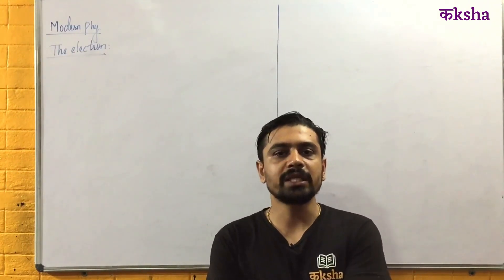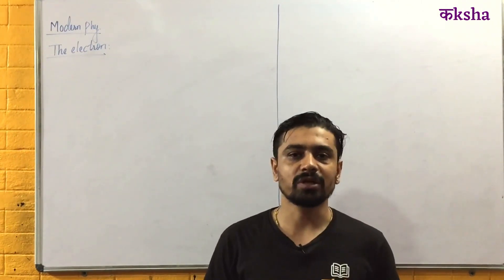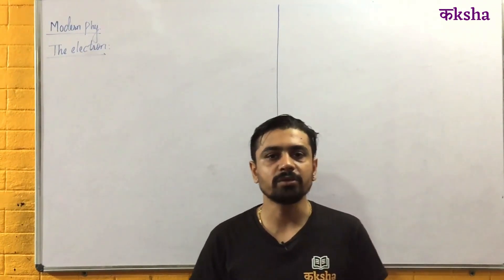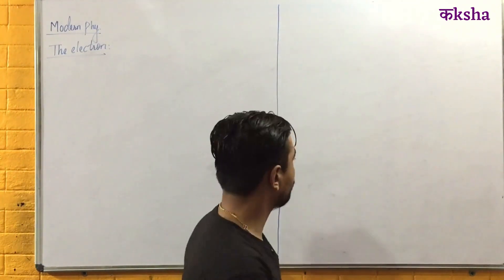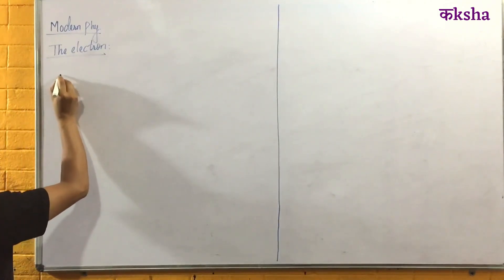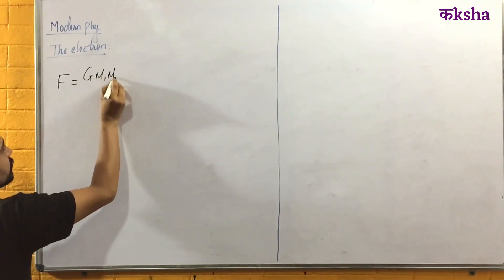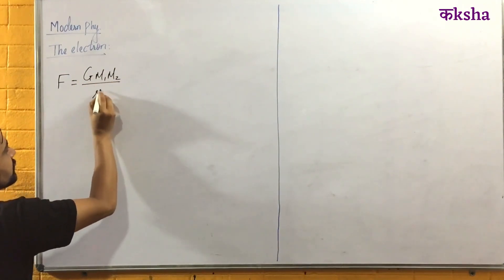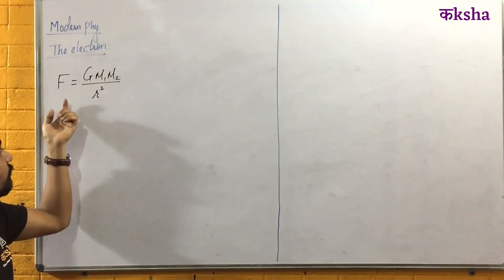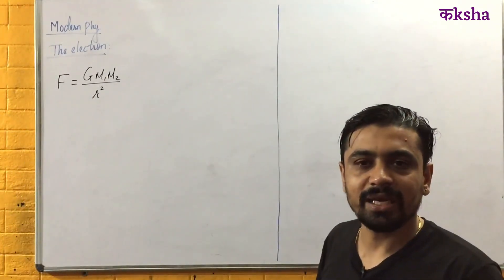This is a genius man from Great Britain, Sir Isaac Newton. In 1687, he published a book and published the laws of motion and the universal law of gravitation. The gravitational force between two bodies is given by F = G M1 M2 divided by R squared. If you know the masses of two bodies and the distance between them, you can precisely calculate the gravitational force between them.